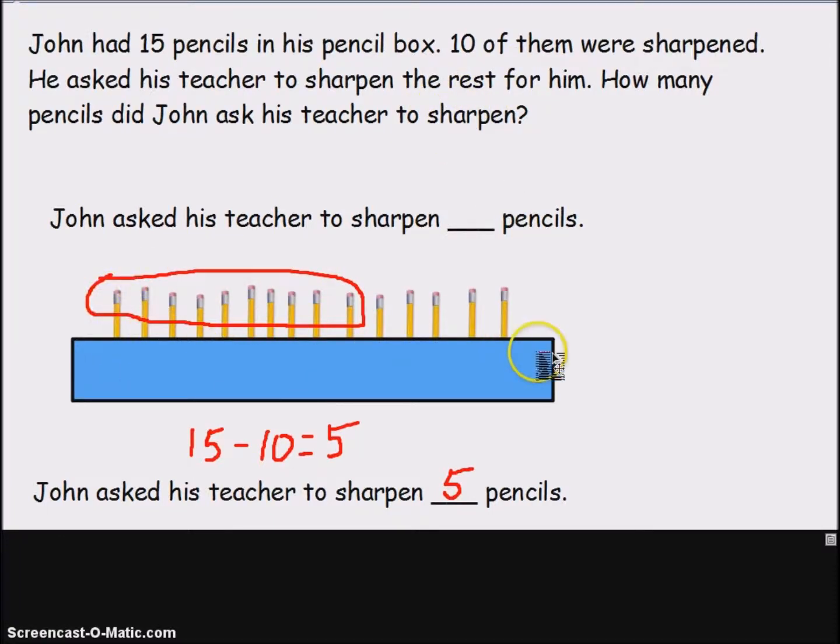I drew my picture as a box with 15 pencils in it, which matches with the fact that there were 15 pencils in his box. I circled 10 pencils to show the ones that were already sharpened, and then counted the rest that were not circled to represent the ones that needed to be sharpened. There were 5 pencils not circled, meaning 5 pencils needed to be sharpened still. And that makes sense since 5 is less than 10, which is less than half of 15.